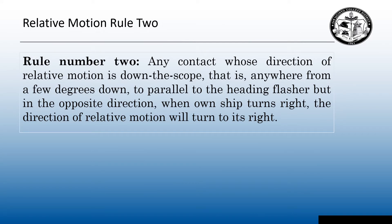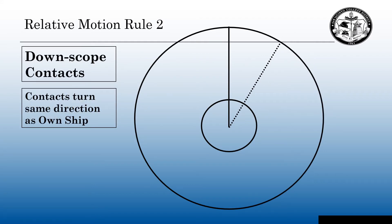Relative motion rule 2. Any contact whose direction of relative motion is down the scope — that is, anywhere from a few degrees down to parallel to the heading flasher, but in the opposite direction — when own ship turns right, the direction of relative motion will turn to its right. Down-scope targets: contact turns same direction as own ship. Our vessel is going to turn from due north to starboard. So if we have a down-scope target, when we alter course to starboard, it's going to turn in the same direction.